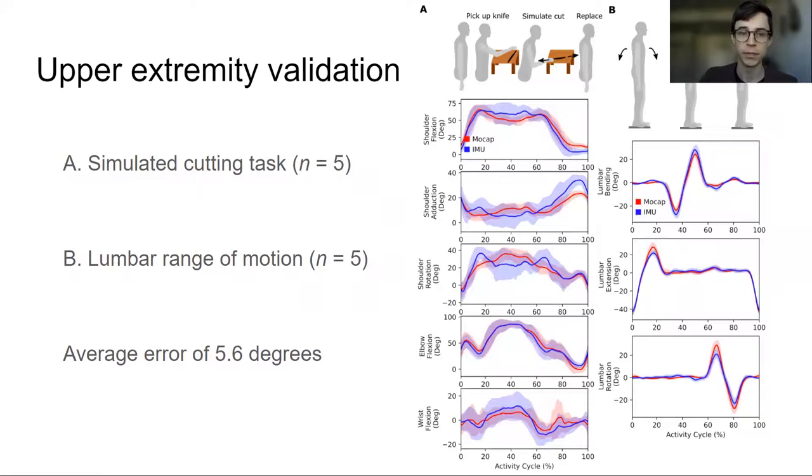We also did an upper extremity validation where we had people either simulate a cutting task or do a lumbar range of motion test. Again we saw fairly low errors of 5.6 degrees depending upon which joints. If you want additional details about that I suggest you check out our preprint.